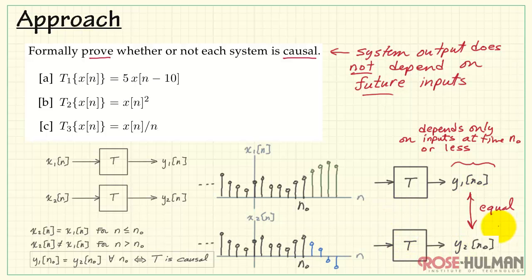So we essentially check to see whether or not these two signals are equal, these two output signals. If they are equal, then we say that T is causal.